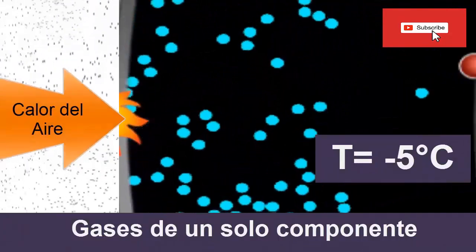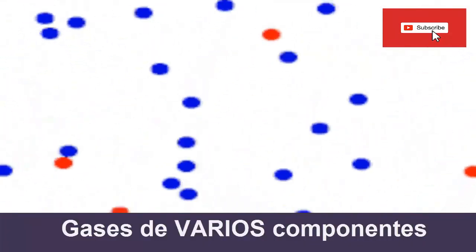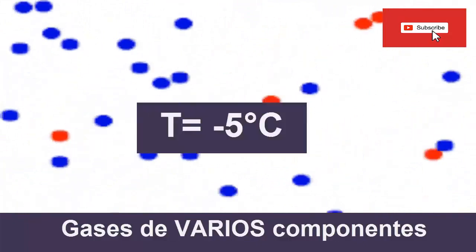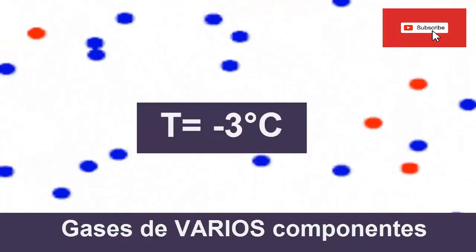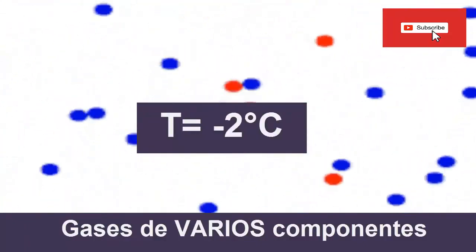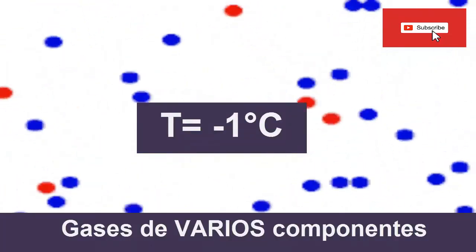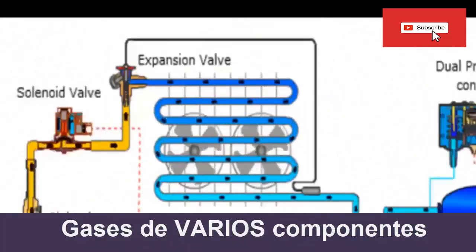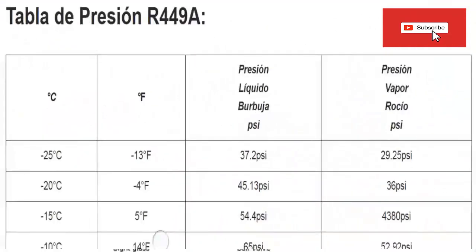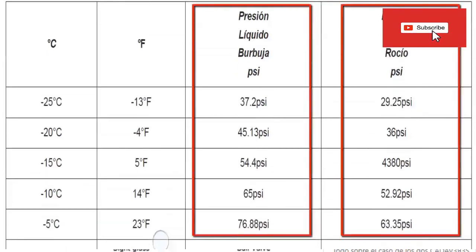However, there are refrigerants that are made from the mixture of several gases, where there can be a small increase in temperature while its phase change occurs. This phenomenon is called refrigerant glide. On the screen, we have the table of pressure and temperature of the refrigerant gas R449A. As we can see in the table, we have two pressure columns: one corresponds to vapor or dew pressure, and the other to liquid or bubble pressure. This occurs because R449A has glide.